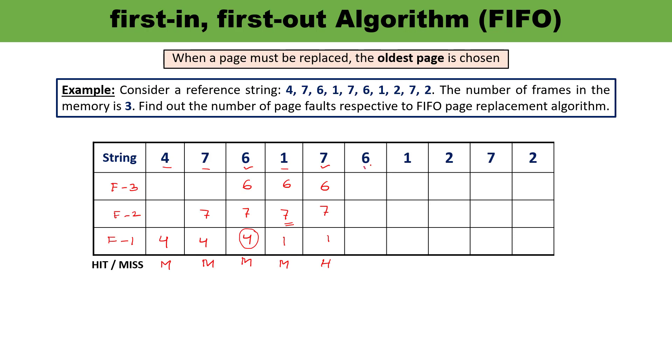Again next digit is 6. Check whether 6 is present or not. Yes, 6 is present over here. It means this is the condition of hit. There will be no replacement, you are going to write the data as it is.